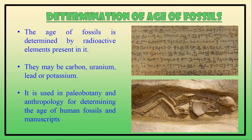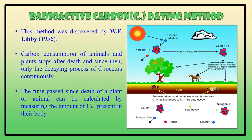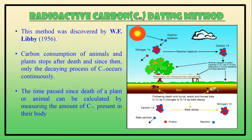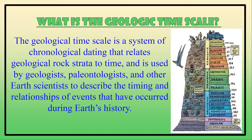Determination of age of fossils: this can be determined by radioactive elements present in them. All living tissue absorbs carbon, uranium, lead, and potassium, which are used in paleobotany and anthropology for determining the age of human fossils and manuscripts. Radioactive carbon-14 dating was first discovered by W.F. Libby in 1956. Carbon absorption by animals and plants stops after death. After death, only the decaying process takes place, and C-14 decays continuously. The time since death can be calculated by measuring the amount of C-14 remaining in the body.